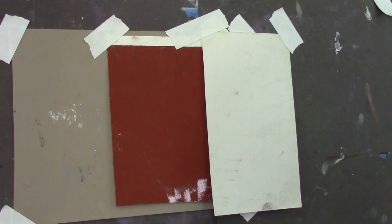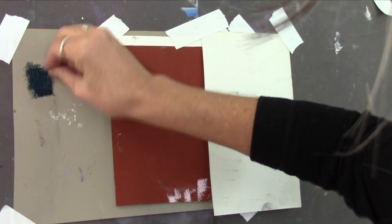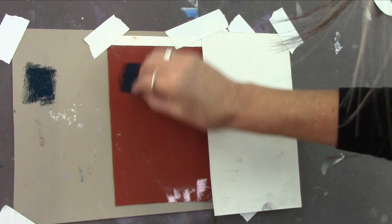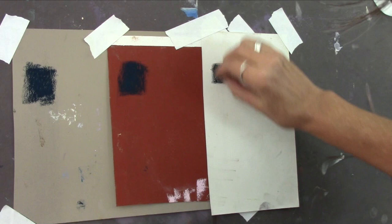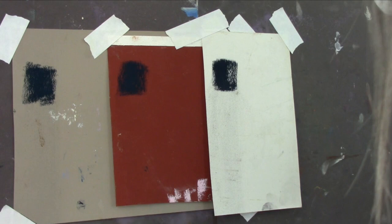We're going to start with Nu Pastel. This is the blue spruce that I really love. Then I'm going to put it on three different papers. This is Pastel Premier, this is ColorFix, and this is Wallis. I'm just going to get a little swatch of that on there.